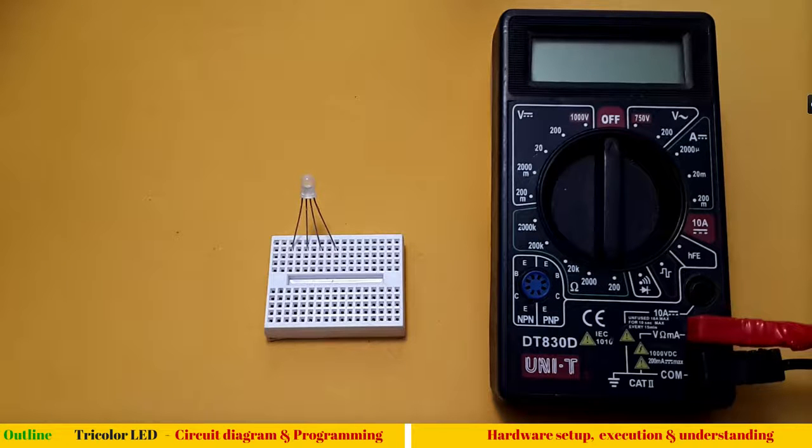I hope you have seen a digital multimeter before. We have this knob and here we have DC voltage which can measure from 200 millivolts to 1000 volts. Similarly we have AC voltage.